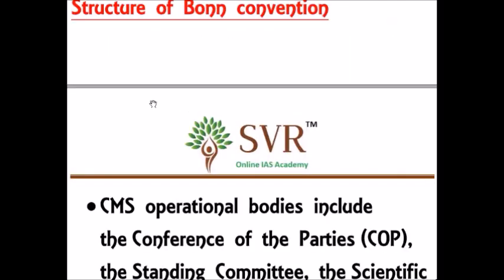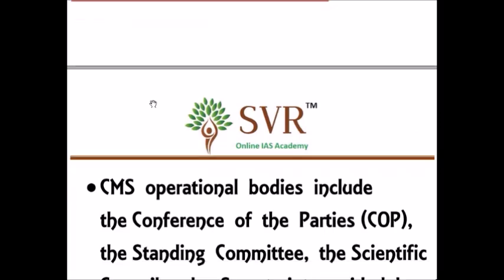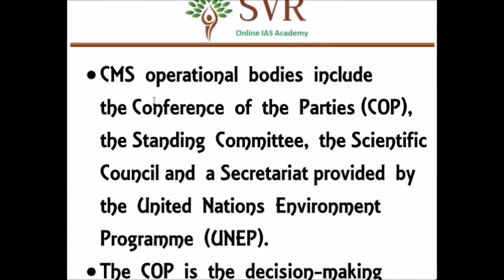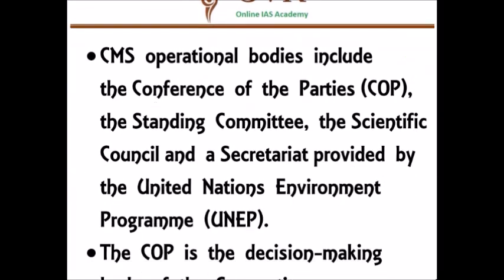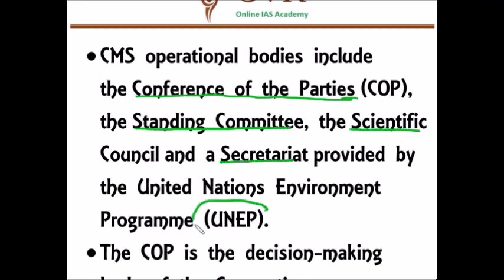The Bonn Convention has many bodies. The most important is the Conference of Parties, which is the highest decision-making authority. Other committees include the Standing Committee, the Scientific Council, and a Secretariat, which is provided by the United Nations Environment Programme.